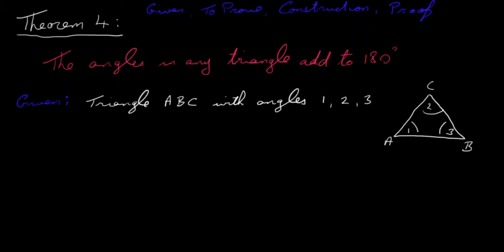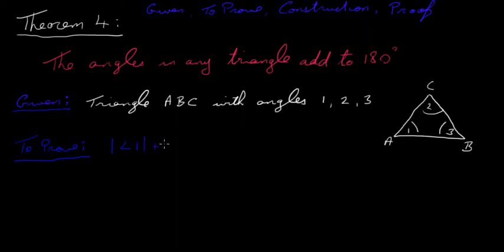The next thing we need to write down is what we need to prove. What we need to prove is that angle 1 plus angle 2 plus angle 3 all add up to 180 degrees.